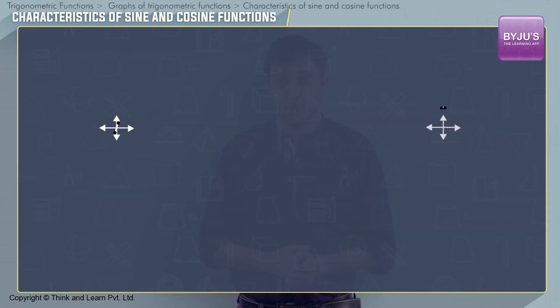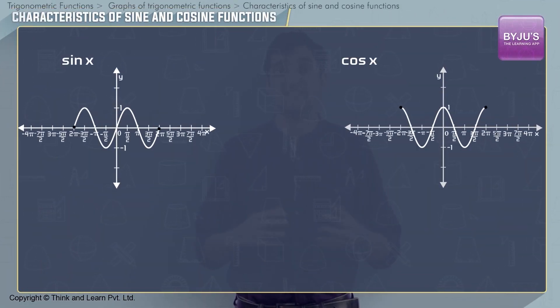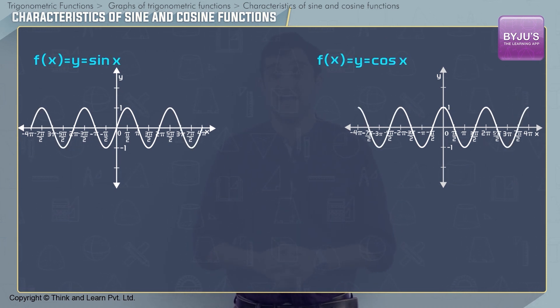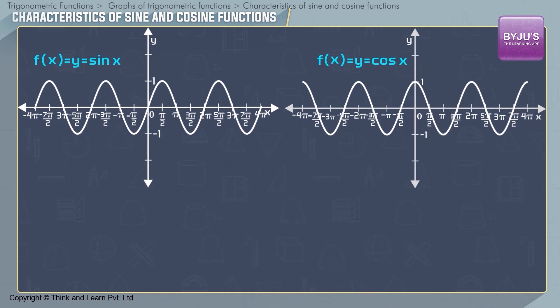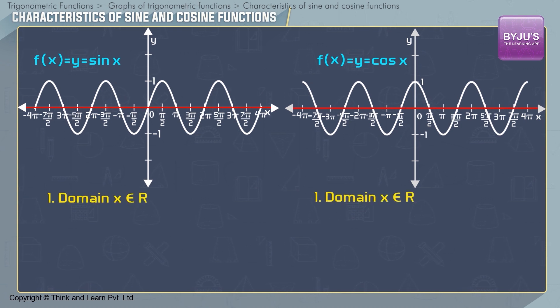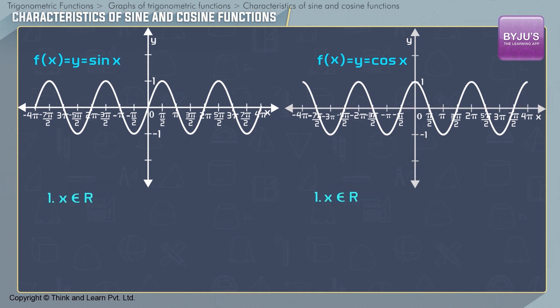Looking at the graphs of sin x and cos x, we can say that the functions y = sin x and y = cos x have the following characteristics. The domain of each function is all real numbers. This means sin x and cos x are defined for all real values of x. The range of each function is the closed interval [-1, 1]. That is, both sin x and cos x have a maximum value of 1 and a minimum value of -1.